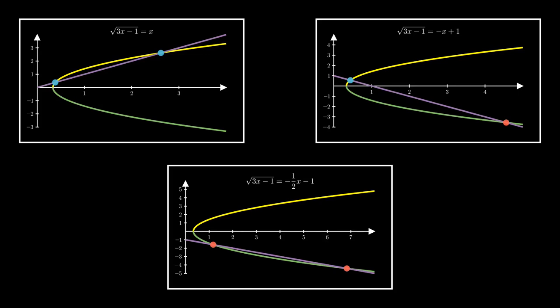And here, by graphing both sides of the equation independently, we got that different angle to tell us exactly when, and why, extraneous solutions show up.